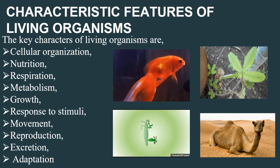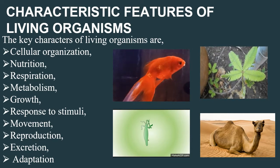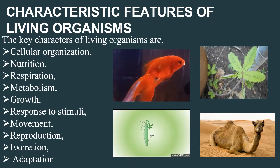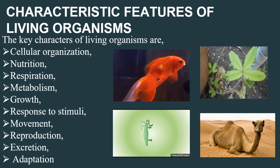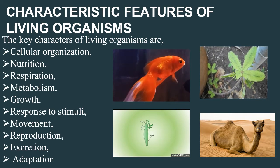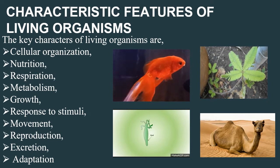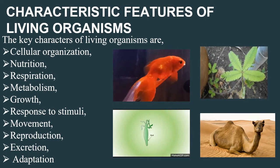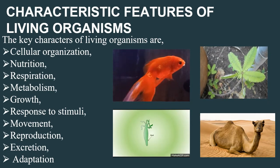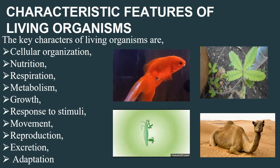Our body is made up of cells — it may be unicellular or multicellular. Nutrition refers to the feeding habit of an organism. There are two types of nutrition: autotrophic nutrition and heterotrophic nutrition. Plants use autotrophic nutrition because they can prepare their own food, while animals use heterotrophic nutrition because they depend on other organisms for food.